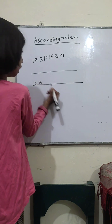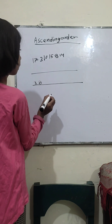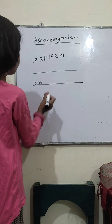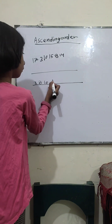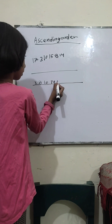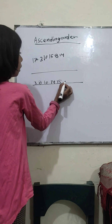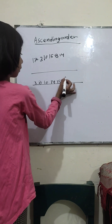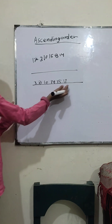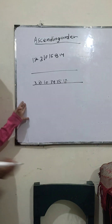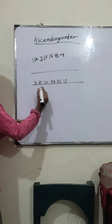Then we will write 10, then 14, then 15, then 17. In this case, we will know that the ascending order is written smallest to greatest.